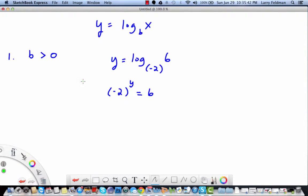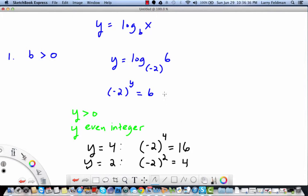Let's look at a few possibilities for y. Let's say y is positive and y is an even integer. For example, let's say y is 4. If we let y equal 4, we get negative 2 to the 4th which is 16, and let's try y equals 2, in which case we get negative 2 squared which is 4. We have now surrounded the 6, but you can tell that we've run out of options for even integers.